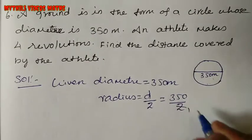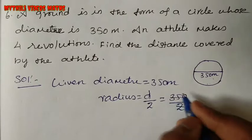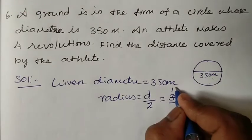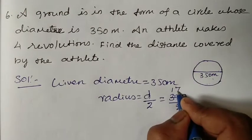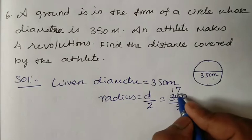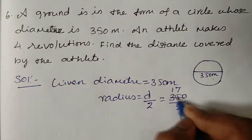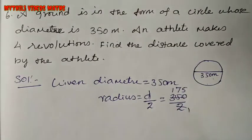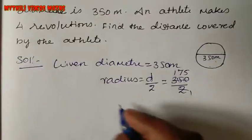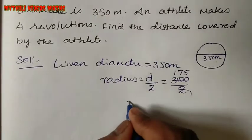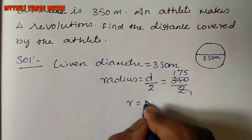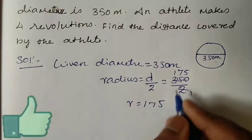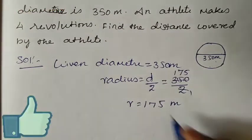Put 350 divided by 2. Cancel: 2s are 2, cut 1. 2s are 2 and then 7, 2s are 14, remaining 1, so 5. 2s are 10. Radius is equal to 175 metres.